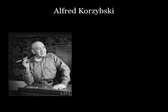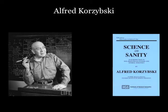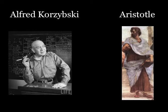Alfred Korzybski introduced General Semantics in 1933 with the publication of Science and Sanity, subtitled An Introduction to Non-Aristotelian Systems and General Semantics. He referred to systems in the plural because General Semantics is one of many possible non-Aristotelian systems. It's important to note that Korzybski was not opposing everything that Aristotle stood for, but rather was specifically concerned with Aristotle's logic, with the mode of thought that it represented, and especially with the way that others had used it over the centuries.